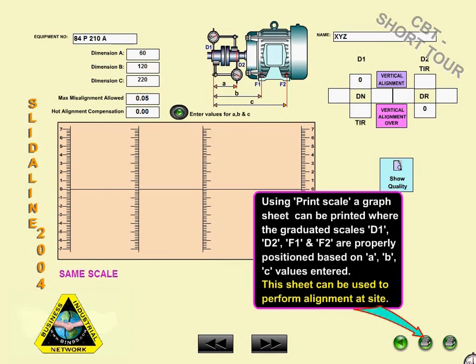Using Print Scale, a graph sheet can be printed where the graduated scales D1, D2, F1, and F2 are properly positioned based on the A, B, and C values entered.